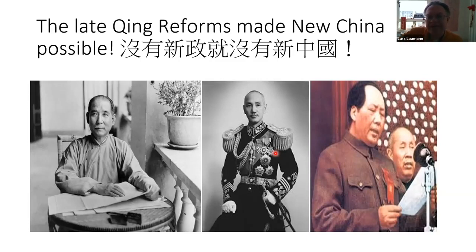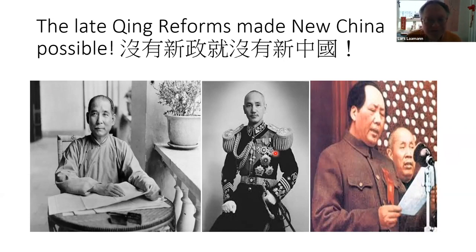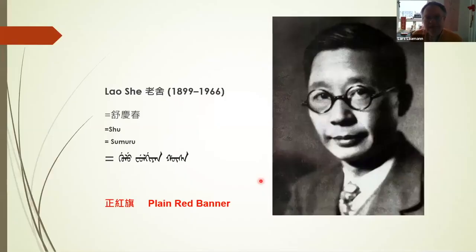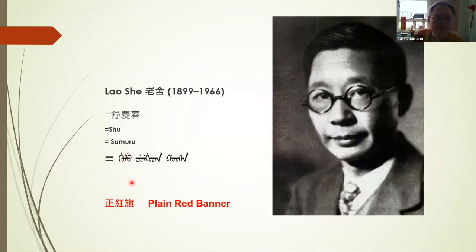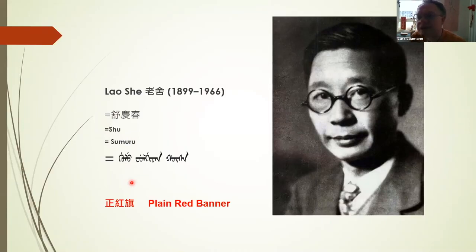Whoever made a point of having traditions that went beyond Chinese state loyalty — that included the Muslims and other groups — lived dangerously. That's why, from this time onwards, families such as the Sumuru had to seem as Chinese as possible in order to integrate into Republican China.